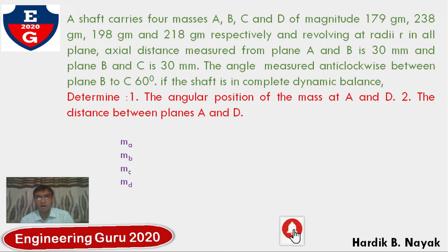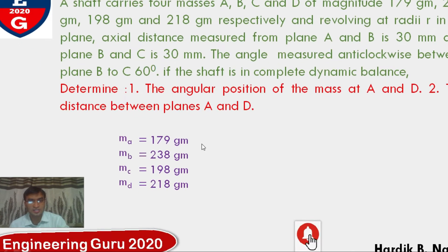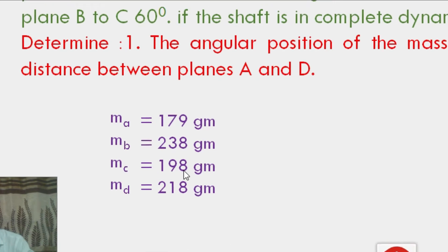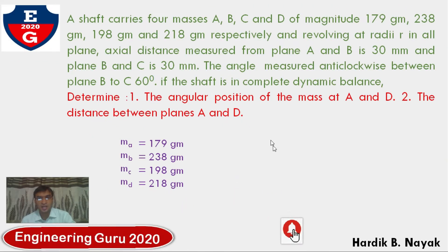The mass magnitudes are 179 gram, 238 gram, 198 gram, and 218 gram respectively. So MA equals 179, MB equals 238 gram, MC equals 198 gram, MD equals 218 gram respectively.